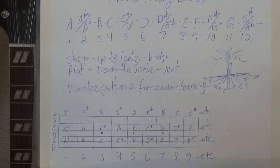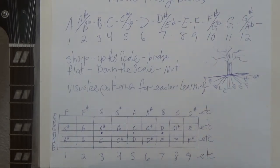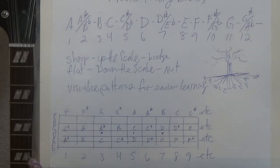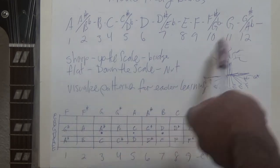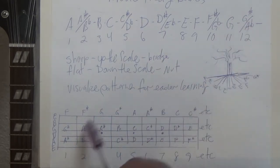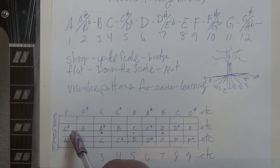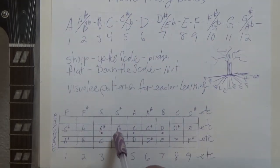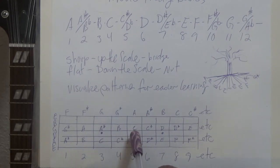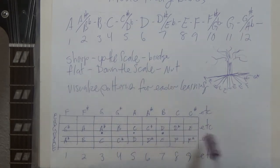Now let's say we start on the G string. The G string, the note would be open — if we play that string open, that's a G note. So then our next fret is going to be the next note in the alphabet. We look up here and it's a G sharp. Then it goes to A — so it goes back to A up here. A, A sharp, B, C, C sharp, D, D sharp, E, and so forth.